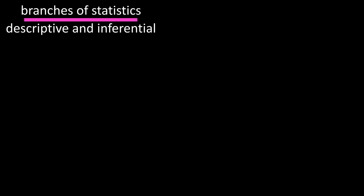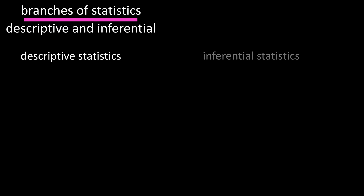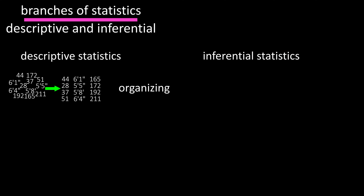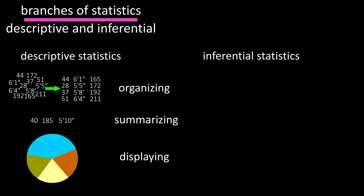There are two major branches of statistics: descriptive statistics and inferential statistics. Descriptive statistics is the organizing, summarizing, and displaying of data.